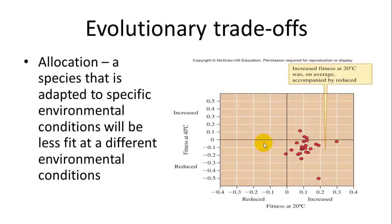One thing that was tested experimentally was an organism's ability to adapt to a different temperature. What was found was the principle of allocation. When you took a small population of fruit flies and raised them at a lower temperature, over many generations they became adapted and selected for that lower temperature. But when put back in a higher temperature, they showed a decrease in ability to survive and reproduce. A species adapted to a specific environmental condition is less fit at a different environmental condition.